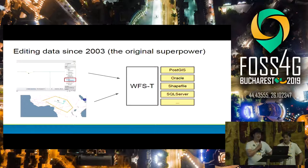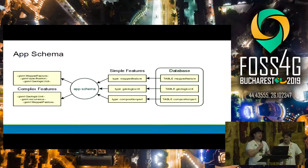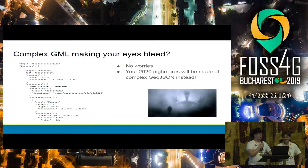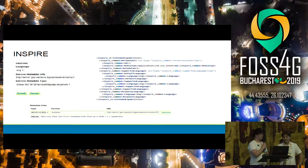We have been editing GeoServer with GeoServer since 2003 — that was the original killer feature. We also support the concept of application schema, so if you have a fixed data product you need to publish, you can map your data into that product. That's very handy for meeting scientific data product standards or INSPIRE. We also offer very nice complex JSON support, so if you are working with complex features, you can pull back JSON instead of complex GML.